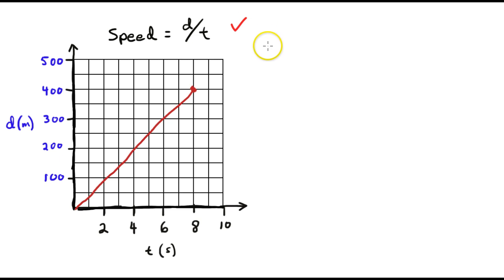So if we do the math, and we say the speed is equal to the distance, which is 400 meters, over the time, which is 8 seconds, and we do the math there.